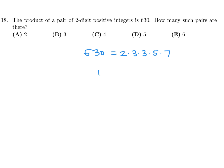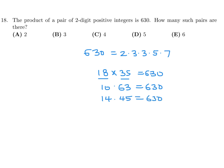Going through the factor pairs: 18 × 35, 10 × 63, 14 × 45, 15 × 42, and 21 × 30. That gives five pairs of two-digit numbers. Number 18 is D.